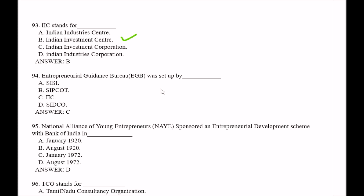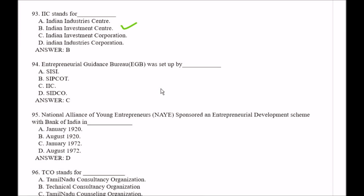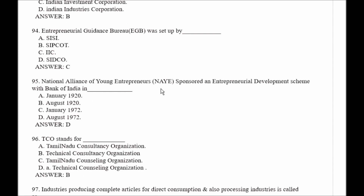Question number 94: Entrepreneur Guidance Bureau is set up by — Option A, SISI; Option B, SIPCOT; Option C, IIC; Option D, SITCO. The right answer is Option C, that is IIC.